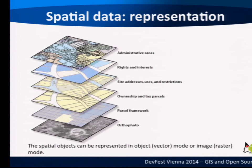Normally we have representation of spatial data in layers. This is what you would find in GIS systems. You have an orthophoto — a photo of the earth — then you have a parcel framework, ownership, tax information. This is an example of a GIS which can be used for administrative purposes. It is a set of spatial data stacked on top of each other.